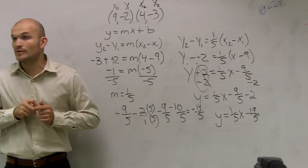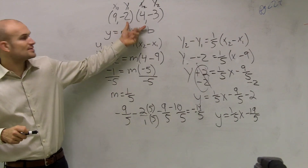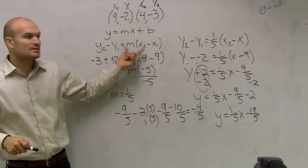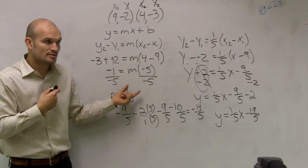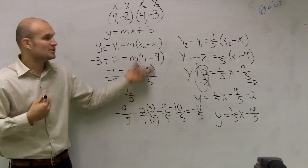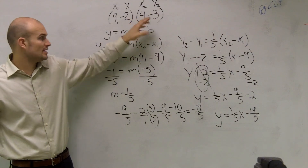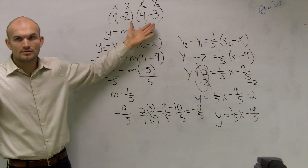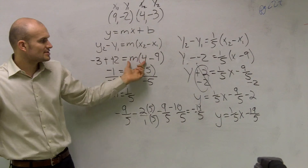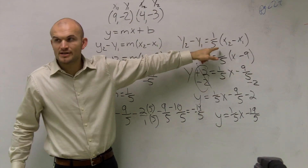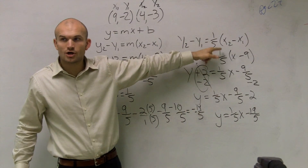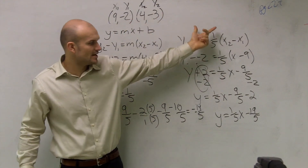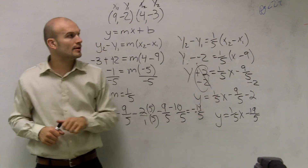So just to recap real quick: if you guys are given two points, you can plug in both points into your formula to solve for m. Or if you just want to find m on your own by graphing it or just looking at the points, you can do that as well. But then once you know what the slope is, you rewrite the equation, find the slope, and then plug in one of your points back into the equation and solve.